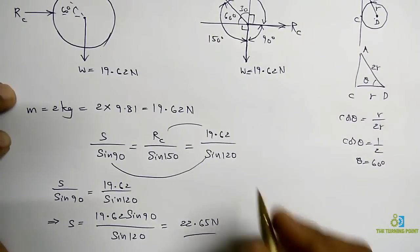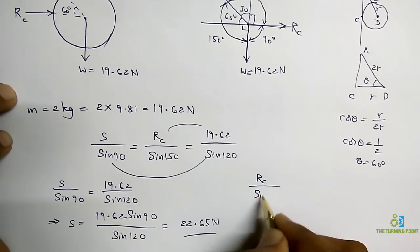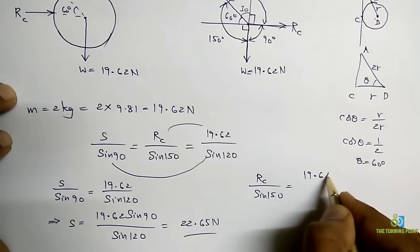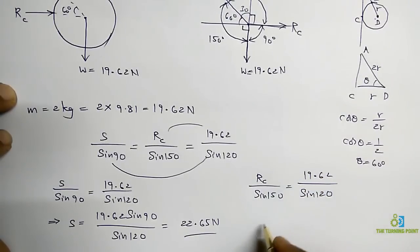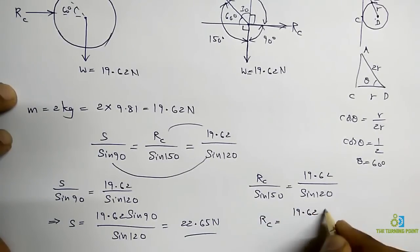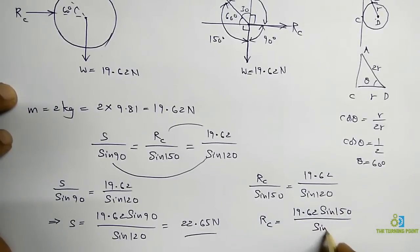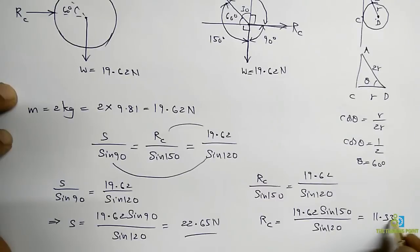Similarly, if you want to find the value of RC, consider this relation. RC divided by sin 150 is equal to 19.62 divided by sin 120. Right. From that RC is equal to 19.62 sin 150 divided by sin 120. So if you simplify that you will get 11.33 Newtons.